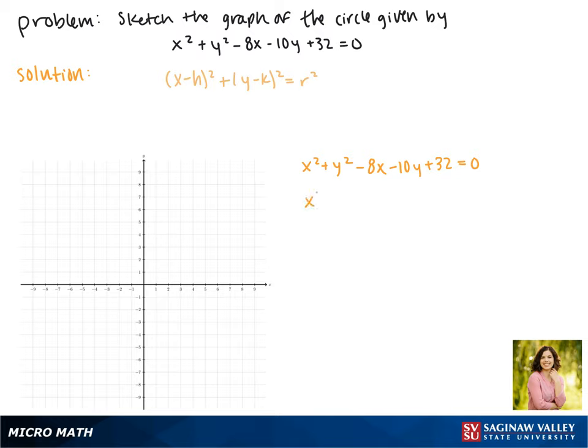We'll rewrite this so that our x's are together, and we'll leave a blank space for the constant that we need to fill in when we complete the square. Notice that these two are going to be different numbers, and we need to add both of them to the right side as well.